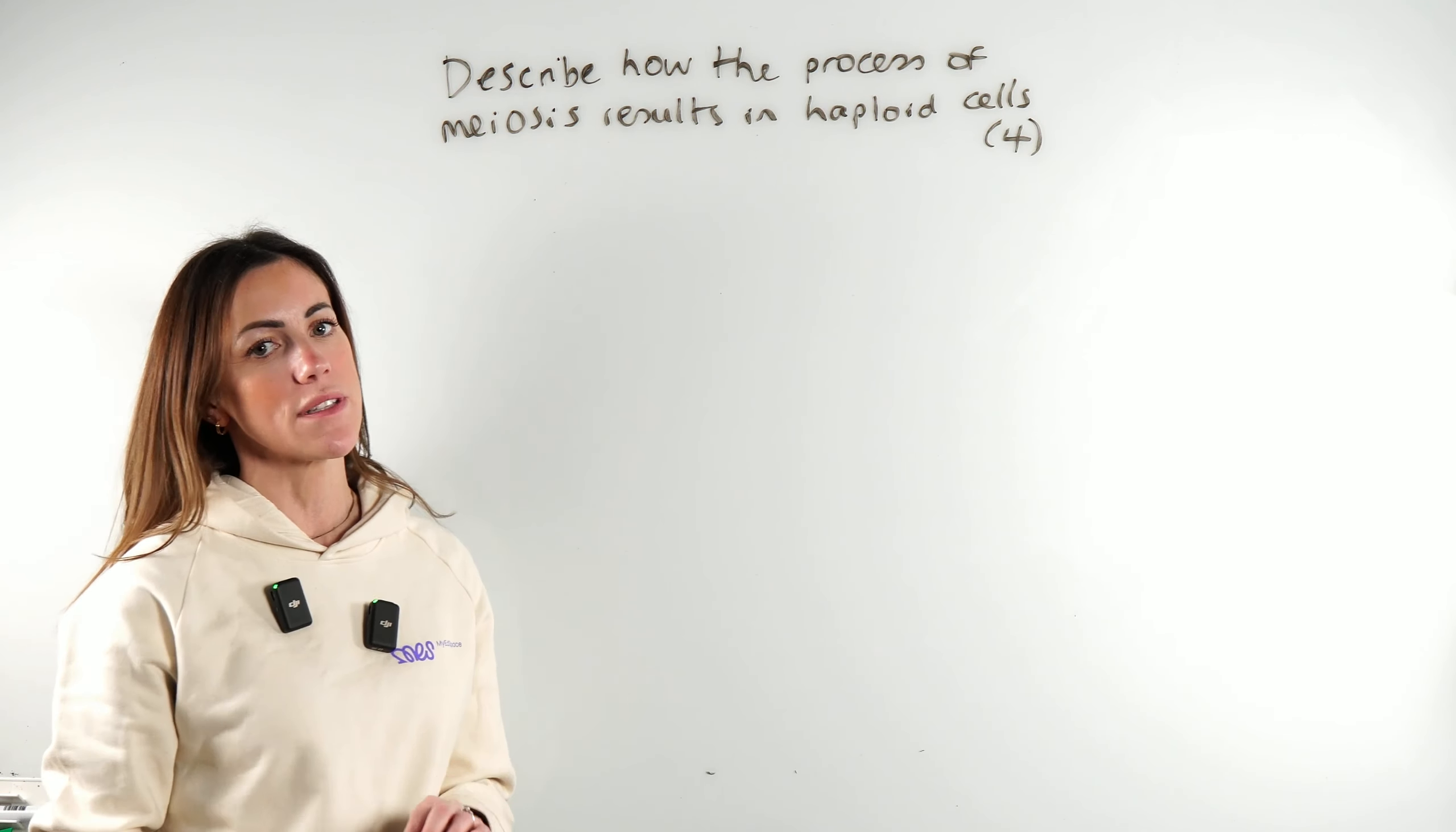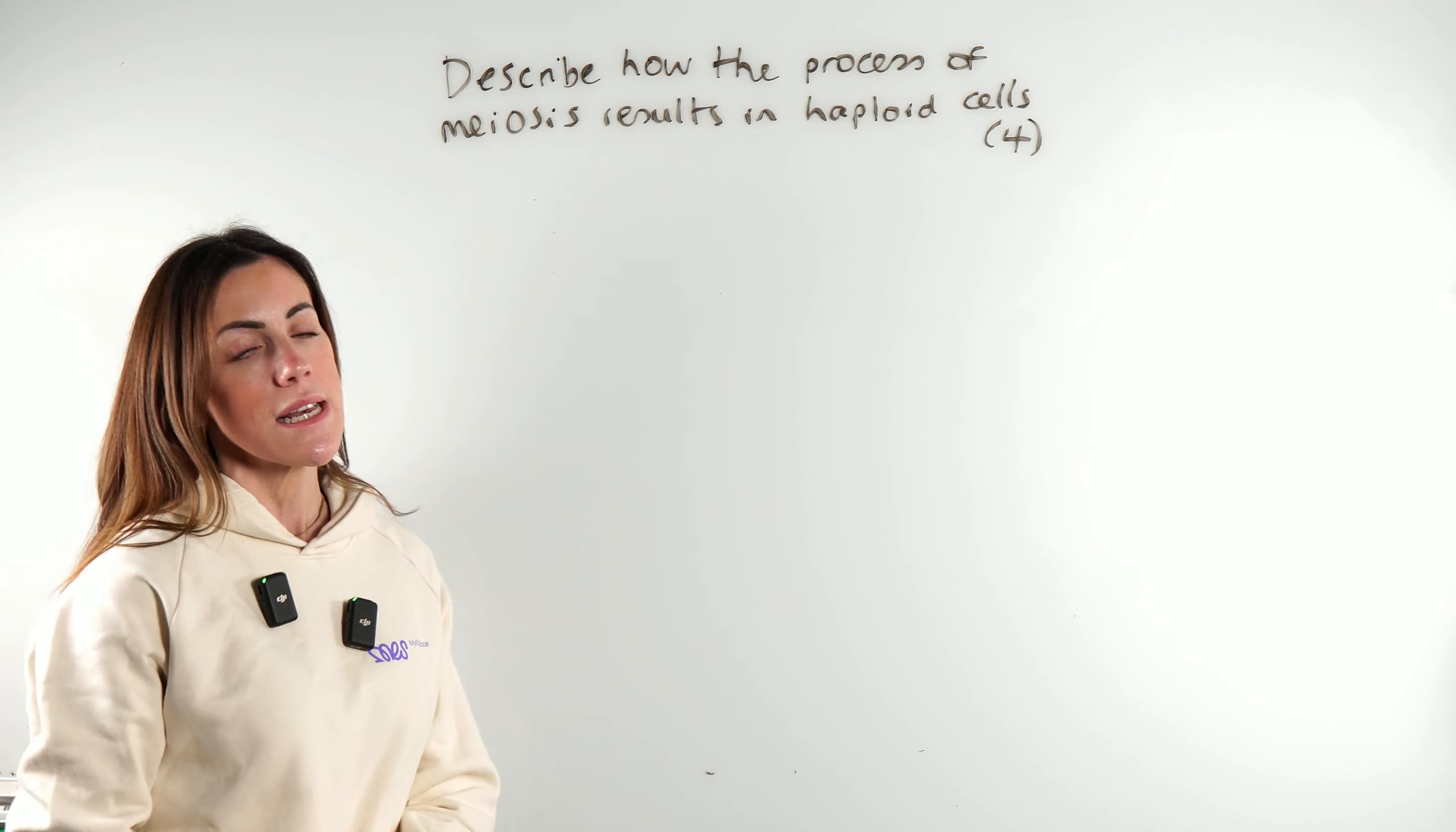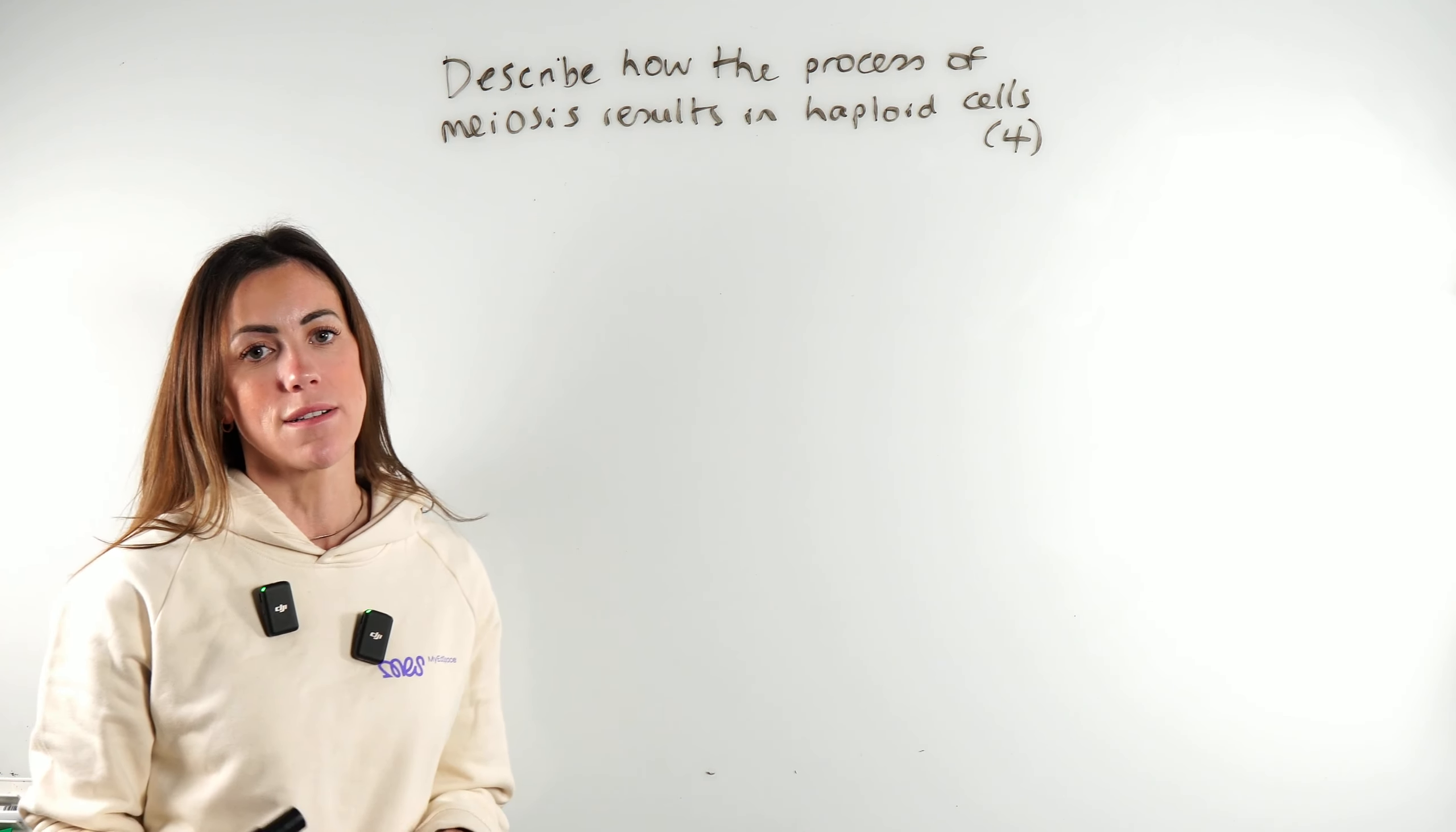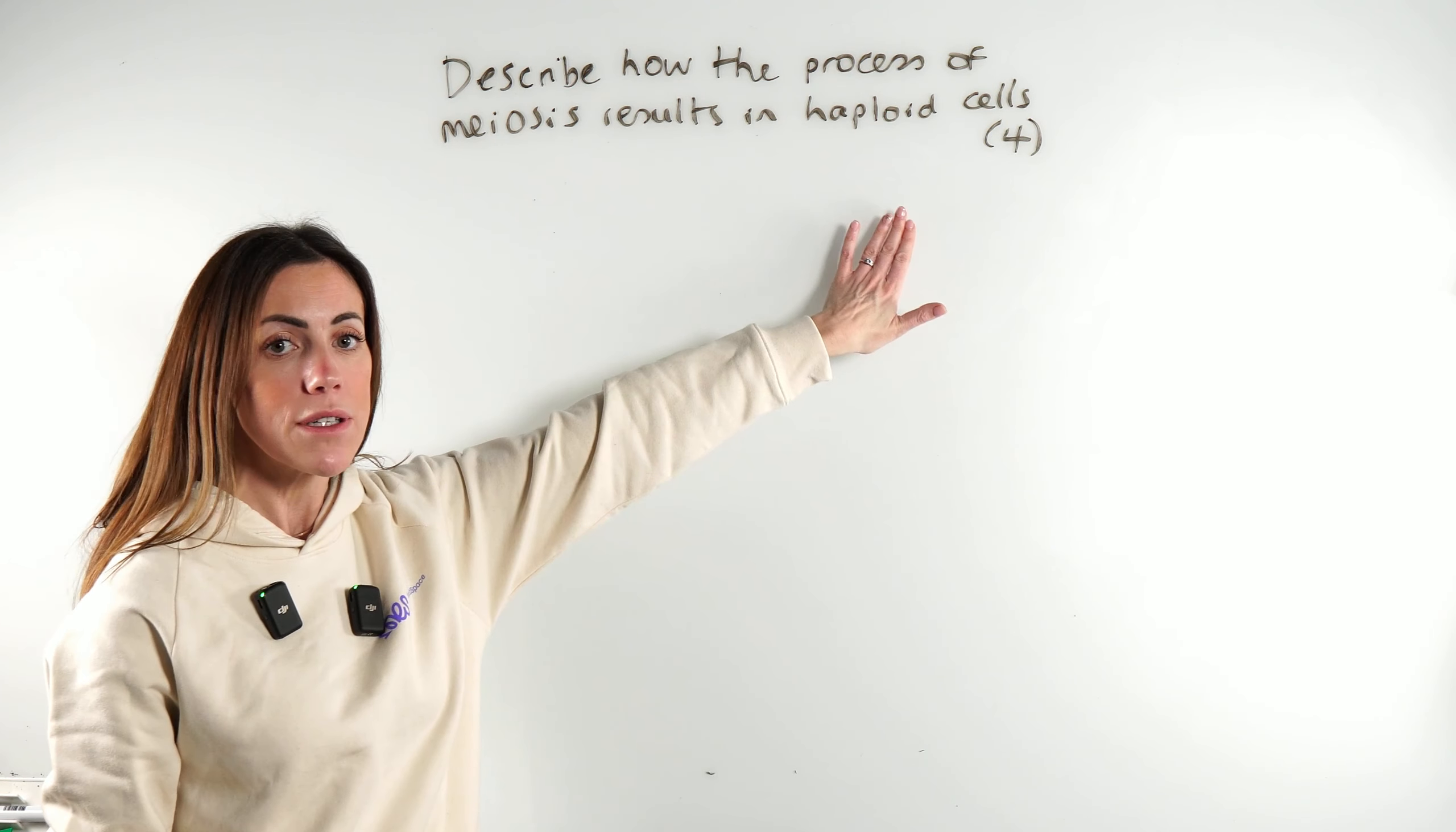I think we've done some questions before on mitosis, but I don't think we've done much on meiosis yet. So let's just think about what meiosis is. Meiosis is the type of cell division that produces gametes or sex cells, which are haploid.